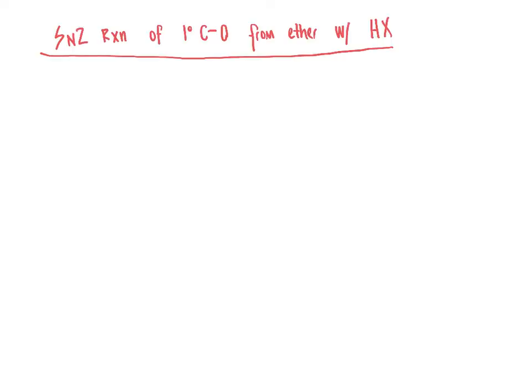We'll start with an example problem, going through the mechanism for the reaction where we take diethyl ether and react it with HBr. Specifically, we'll include that we have an excess of HBr — we abbreviate excess as XS. We could also say two equivalents, which would constitute an excess here.